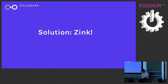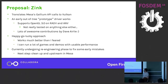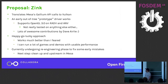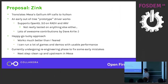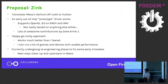My solution to this is called Zinc. It's a Mesa Gallium driver that takes the Gallium API calls and translates them into Vulkan. It's currently in what I would call an early out-of-tree prototype stage. The driver works reasonably well — it supports OpenGL 3.0 on both RADV and ANV, which are the open-source Mesa AMD and Intel drivers. We haven't tested much on anything else. Some people tried to get it working on NVIDIA, but there were some difficulties with the lack of DRI2. Dave Airlie has jumped on this and started contributing a lot of really cool features.